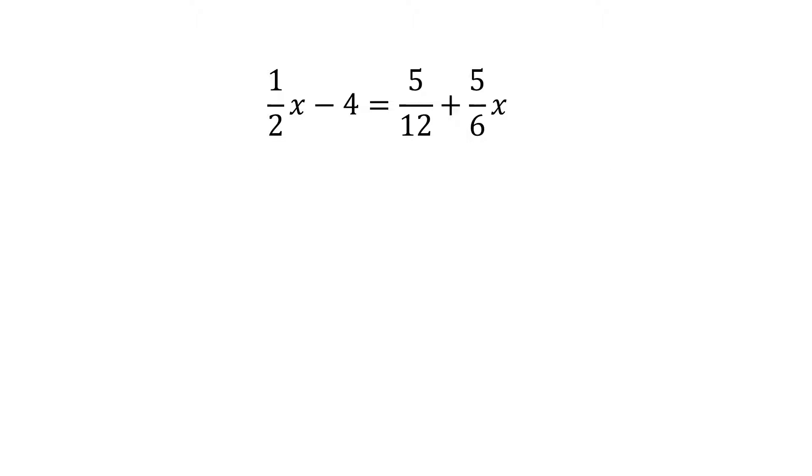To solve this equation, we must find common denominators for the x terms and common denominators for the constant terms. For the x term, the common denominator is 6, so we will multiply 1/2x times 3/3.